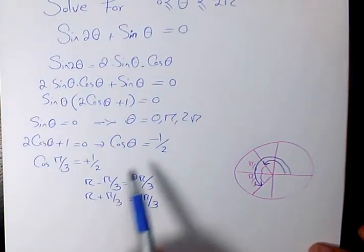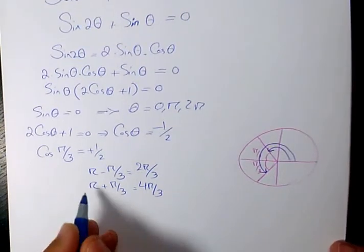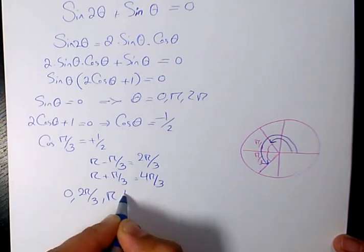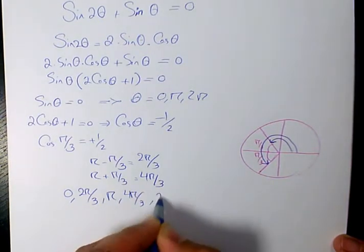So we have 5 answers. Let me arrange them: 0, 2 pi over 3, pi, 4 pi over 3, and 2 pi.